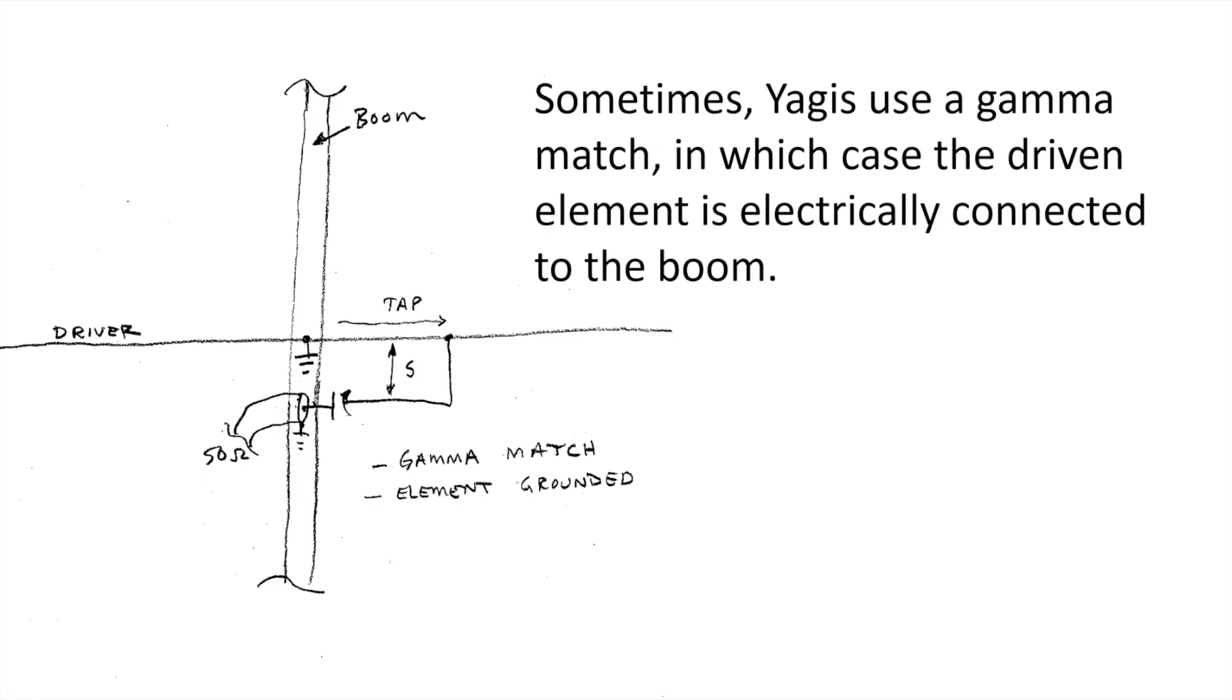Sometimes Yagis will use a gamma match to match the coax to the driven element. The gamma match is kind of exactly like our gamma matched tower. The center conductor of the coax is coupled through the gamma capacitor to the gamma wire, or the shunt wire in the case of our tower terminology. The important thing about this is notice that the driven element is electrically bonded to the boom.